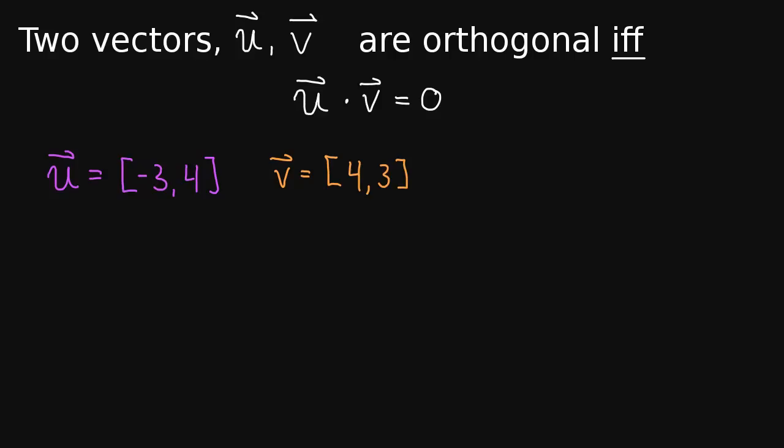Well, let's do their dot product really quickly. U dot v is equal to negative 3 times 4, negative 3 times 4, plus 4 times 3. Well, it's pretty clear this is negative 12 plus 12. So that's 0. So by definition, these two vectors are orthogonal.